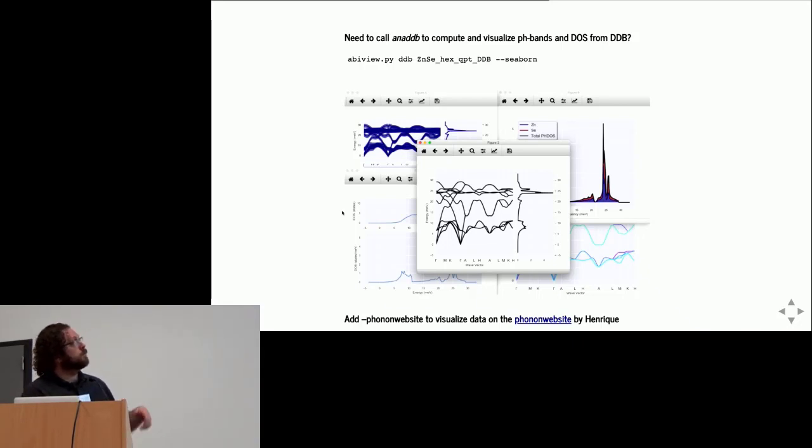Abiview is another script for quick visualization of the results with some pre-processing at the beginning. I use it a lot to analyze the DDB files. In this case, instead of writing the DDB input file and running a calculation, I just type abiview DDB and pass the path to the DDB file, and I have the band structure with phonon DOS and projected density of states. If you have the phonon website option, there's also an automatic interface with the web app developed by Riku that allows you to select the phonon mode and visualize the pattern in real space.